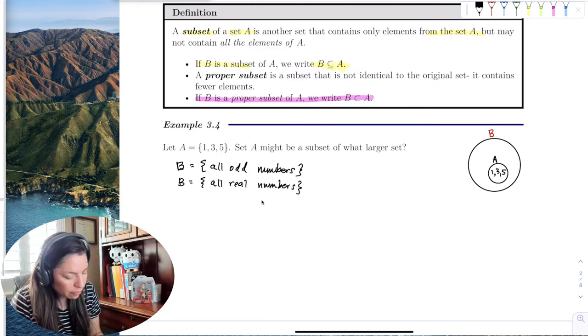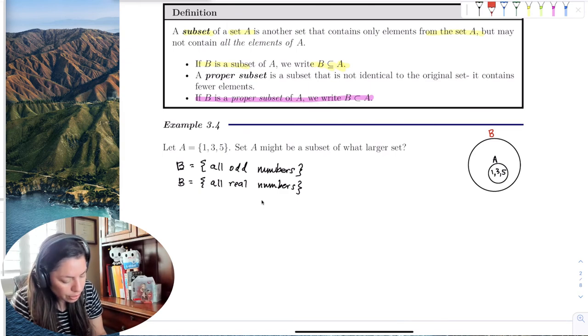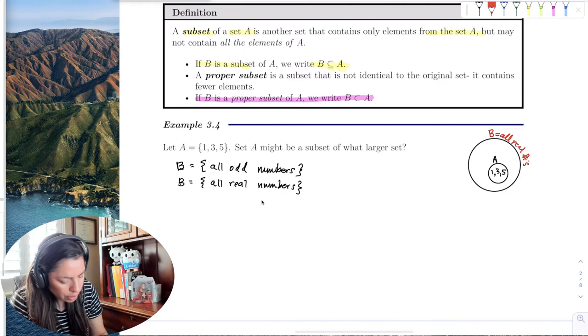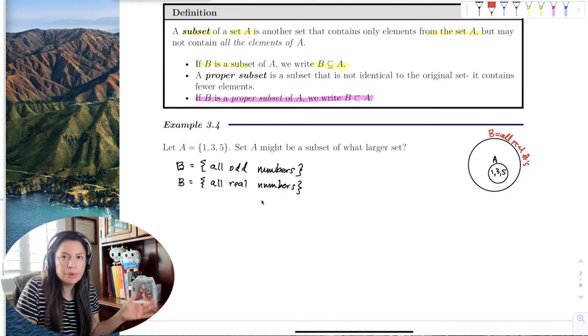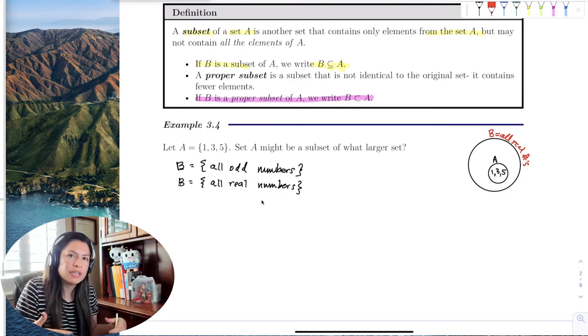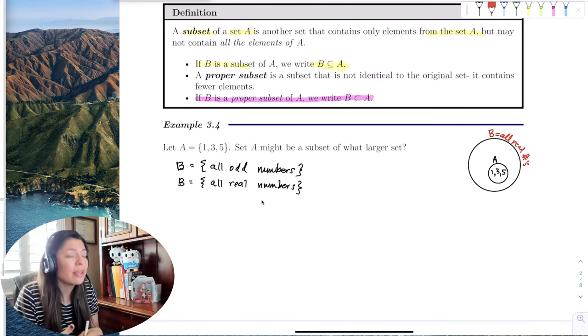Because it's a subset. If B was all real numbers, that's every number on the number line, couldn't 1, 3, 5 be a subset? Yeah, it's a small subset, but it is.